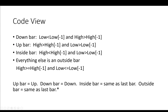So if looking at code makes more sense to you: a down bar is defined as the low is lower than the previous bar — that's what the minus one indicates — and high is greater than the previous bar. For an up bar, you have high greater than the previous high, low greater than the previous low. For an inside bar, the high is less than the previous high and the low is greater than the previous low. And everything else is an outside bar — the high is greater than or equal to the previous high, and the low is less than or equal to the previous low.